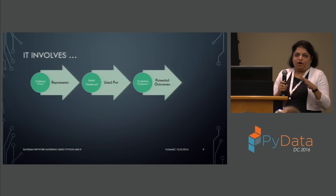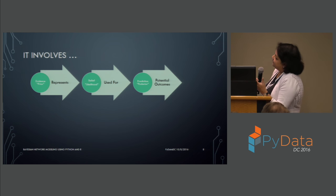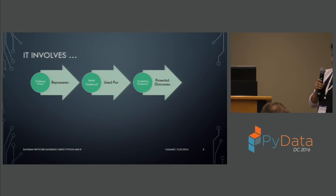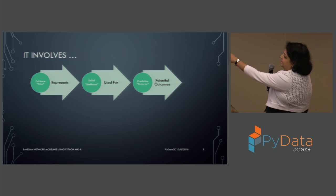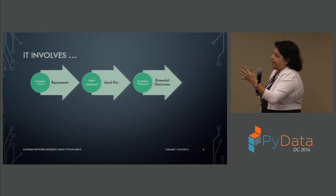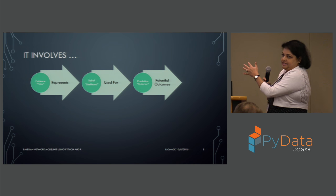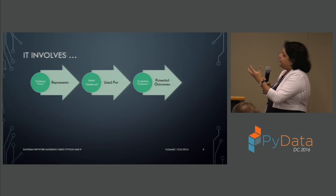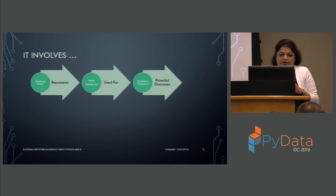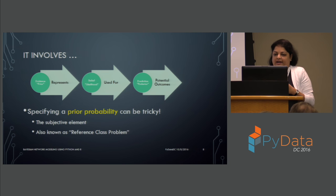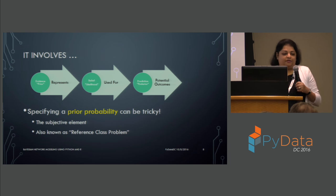Putting it in a more graphical format: your evidence — also called the prior — represents the belief or likelihood, which is used for prediction to come up with a posterior probability representing your potential outcomes. So your evidence is your prior, the likelihood is used for prediction, and the posterior represents potential outcomes. These three terms — prior, likelihood, and posterior — keep coming up often when working with Bayesian networks.